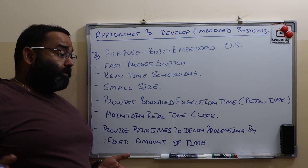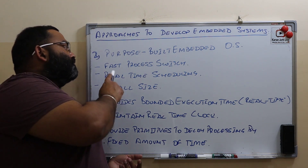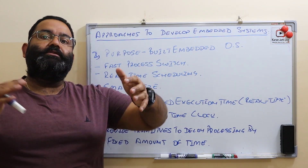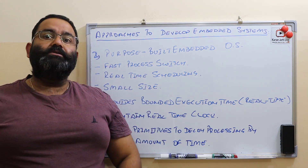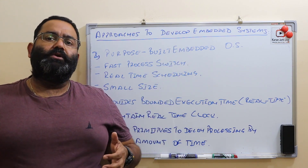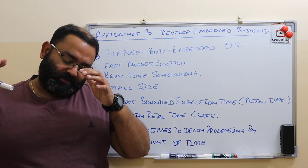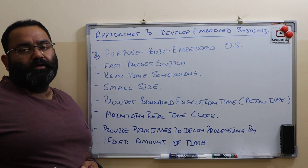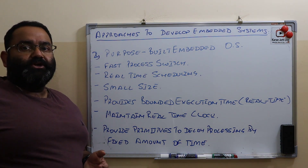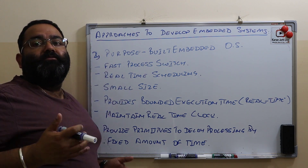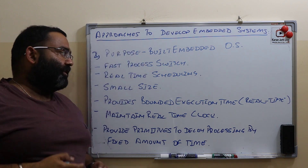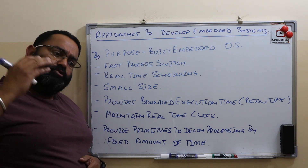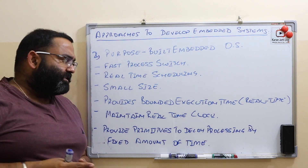Now we will discuss some characteristics of a purpose-built embedded system. First, they have a very fast context switch - when the processor jumps from one process to another we call it a context switch, and purpose-built embedded systems can jump between processes very quickly. They have real-time scheduling capable of handling real-time operations within fixed time constraints. They are also small in size compared to traditional operating systems, which are large - purpose-built embedded systems are small by design.